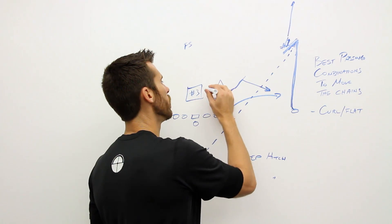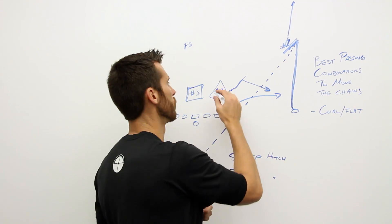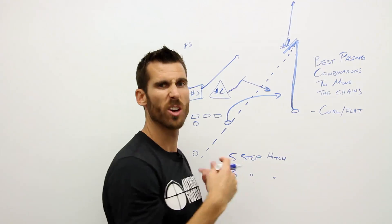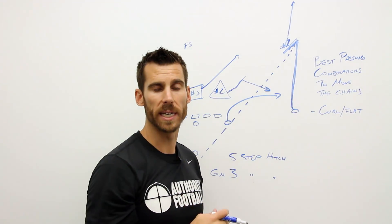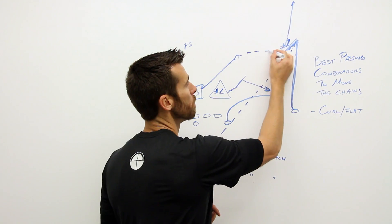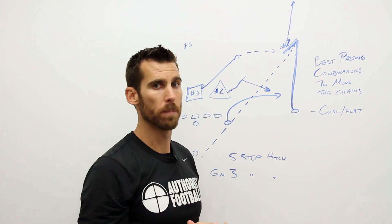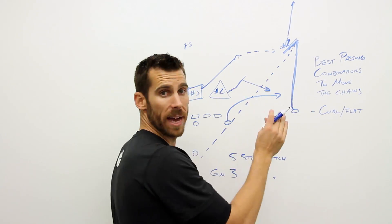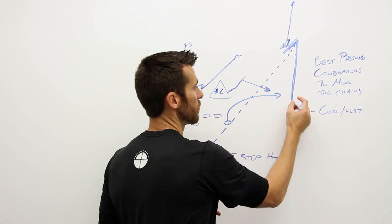The second problem is the number three defender. The number three defender is working out to that hook curl zone where he's going to wall any inside routes. If we're late with our footwork, we're giving him more time to get out there to our route.